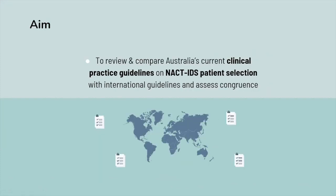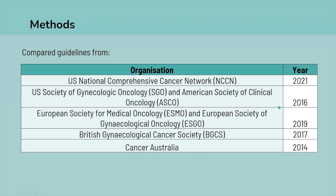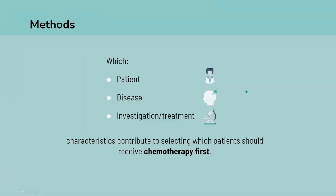The aim of this study was to review and compare Australia's current clinical practice guidelines on patient selection for either pathway with international guidelines and assess congruence. We compared guidelines from the US through the NCCN, SGO, and ASCO; from Europe through the ESMO-ESGO guidelines and the BGCS from Britain; and compared these with Australia's most recent guidelines from Cancer Australia. We looked at patient, disease, investigation, and management characteristics that contribute to selecting which pathway patients should receive.